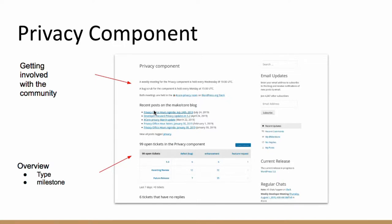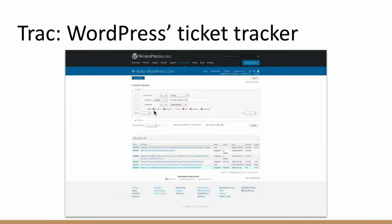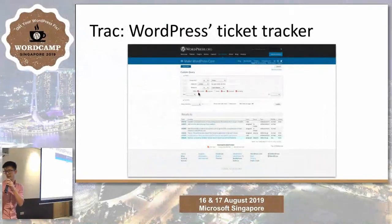A ticket is a unit of problem that needs to be fixed, and it's tracked by this software called Trac — the WordPress Ticket Tracker. If you go to wordpress.org and click Get Involved, there's a link that brings you to Trac and you get this screen. It's usually a huge list of tickets — thousands, tens of thousands. But there are filters you can add.